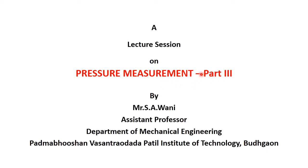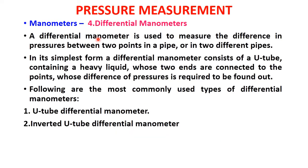In the last lecture we covered various types of manometers used for pressure measurement, including the piezometric tube, simple U-tube manometer, single column manometer, and differential manometer. Mechanical gauges were also introduced. In this lecture we are going to cover the fourth type of manometer — the differential manometer — and then see the various types of mechanical gauges used for pressure measurement.